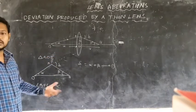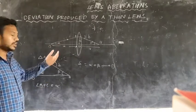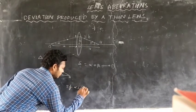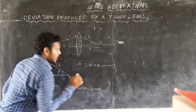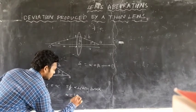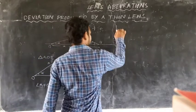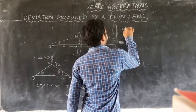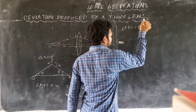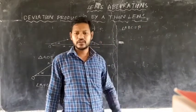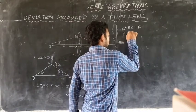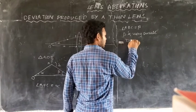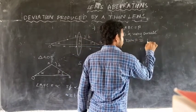In triangle AOC, angle AOC is alpha. If alpha is very small, then we can write alpha ≈ tan(alpha). Similarly, angle ACB is beta. If beta is very small, then we can write beta ≈ tan(beta).